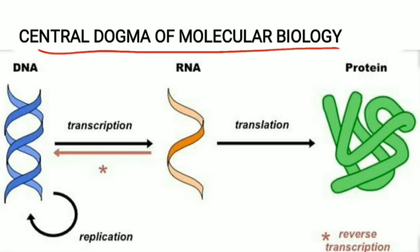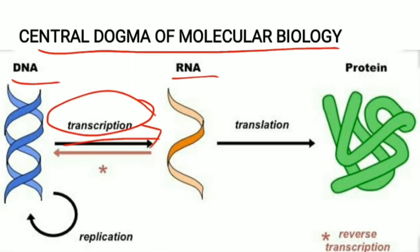We know that our genetic material is DNA, and transcription is a process where this DNA is converted into RNA. But why couldn't we have RNA as the genetic material? This is because DNA is more stable and comparatively less reactive than RNA, and hence it is preferred as a genetic material over RNA.